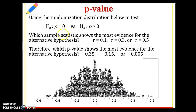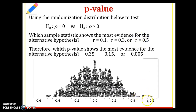Looking at another distribution. Now we're assuming the null hypothesis is that correlation — that's the character rho — is 0. So we're assuming no correlation. In the alternative, there's some positive correlation between two variables. Which sample statistic shows the most evidence for the alternative hypothesis? The alternative is that rho is positive, so the sample statistic that has the most evidence is going to be positive and the most positive. So it would be 0.5. If you look at the dot plot, 0.5 is right around here. The most evidence would be the smallest p-value, so 0.5 with a p-value of 0.005 would be the most evidence for the alternative hypothesis.